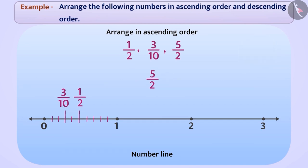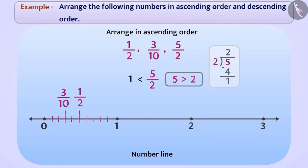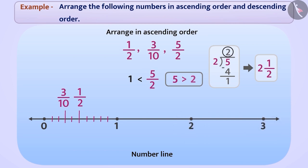We can see that the numerator of 5 by 2 is greater than the denominator. That means this number is greater than 1. If we divide 5 by 2, we will get 2 as a whole and half as a part — that means we can write 5 by 2 as 2 and a half. So the position of 5 by 2 is in between 2 and 3. We will divide the distance between 2 and 3 in two equal parts and take one part to express 5 by 2.